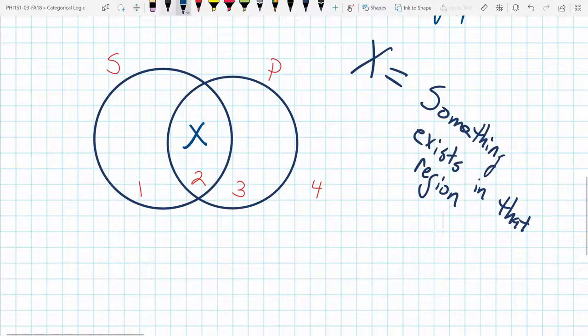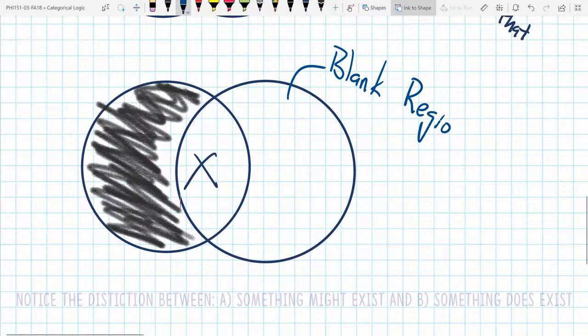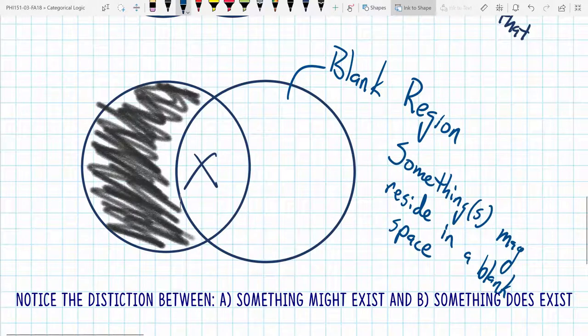Then finally, we have a blank space. What does it mean when a region is blank? We have to be really careful what we are saying and what we're not saying with blank spaces. And this is going to sound weird, but make sure you understand. In a blank space, it is not the case that nothing can exist in this region. Or we might say it's possible that something or many things exist in that region. We're just not ruling it out. So we're not making a positive claim.